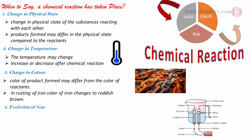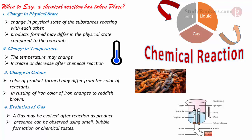A reaction can also be indicated by evolution of gas. A gas is evolved as a product of certain reactions. The presence of gas can be detected by its smell, bubble formation, or certain types of chemical changes.